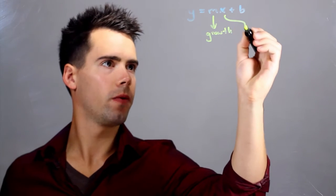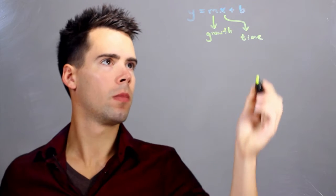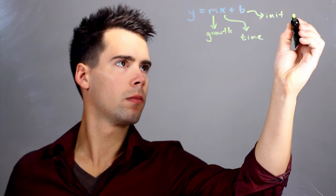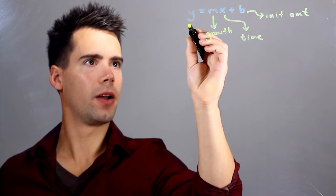X can be referred to as your time. B is your initial amount of something. And y is your final amount.